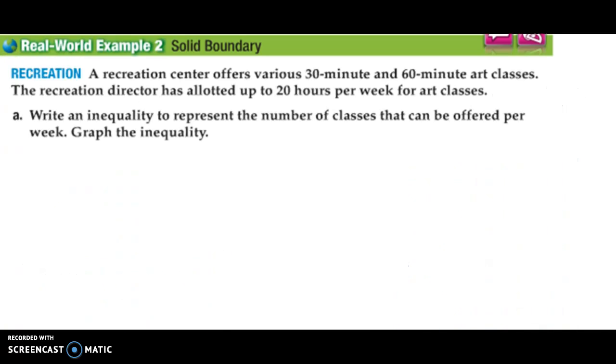Now we can also use this to set up word problems. Here's an example of one. It says a recreation center offers various 30-minute and 60-minute art classes. The recreation director has allotted up to 20 hours per week for art classes. So the first part is to write an inequality to represent the number of classes that can be offered per week and then graph the inequality. So if I think about it, I'm looking at hours. So now these classes are in minutes. So if we think of it in hours, 30 minutes would be half an hour, so 0.5 times some class, we'll call it x. And then the other one is going to be 60 minutes or 1 hour times y. And altogether, they have up to, which means less than or equal to, 20 hours.